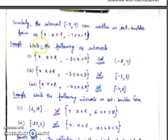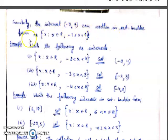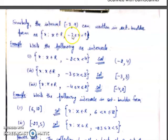Similarly, the interval [−7, 9) can be written in set builder form as: X such that X ∈ R and −7 ≤ X < 9. Because the side of −7 has a closed bracket, we write ≤, and on the side of 9 it is open, so we write strict inequality.